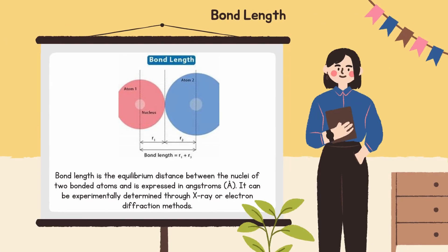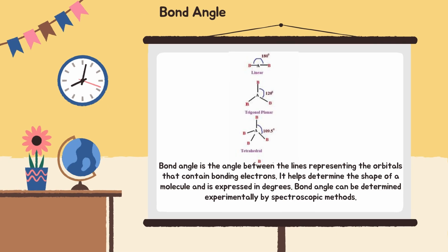Next is bond length. Bond length is the equilibrium distance between the nuclei of two bonded atoms and is expressed in Angstroms. It can be experimentally determined through X-ray or electron diffraction methods. Bond angle. Bond angle is the angle between the lines representing the orbitals that contain bonding electrons. It helps determine the shape of a molecule and is expressed in degrees. Bond angle can be determined experimentally by spectroscopic methods.